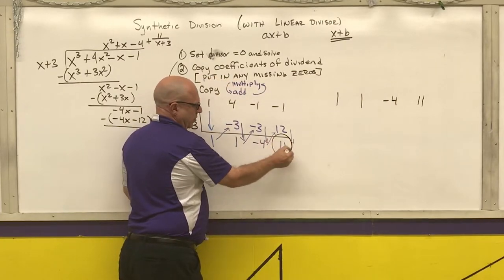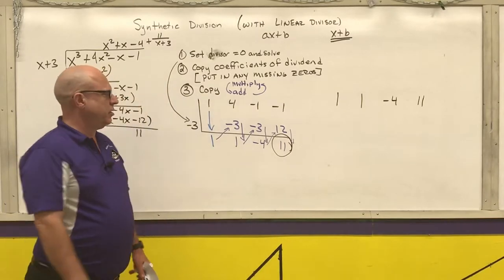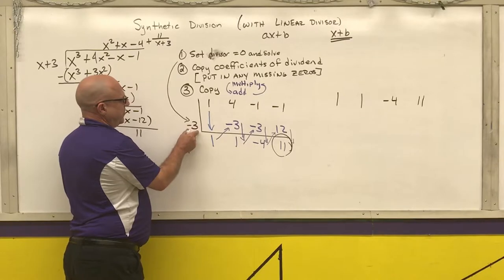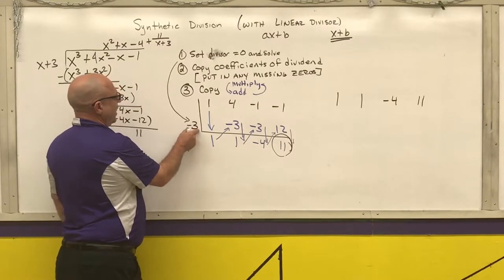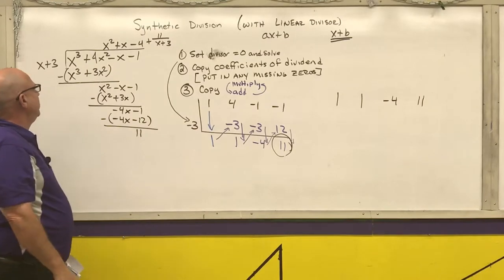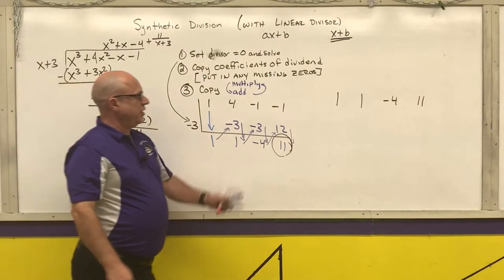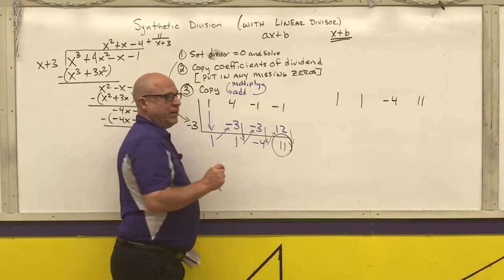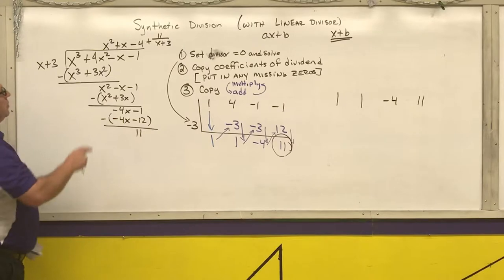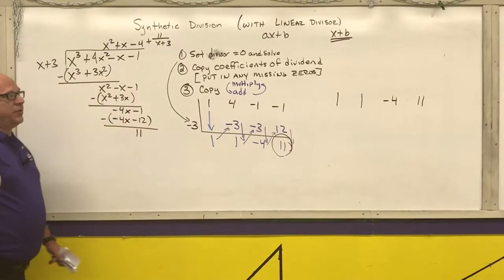This last number is your remainder. At the end of this lecture you're also going to find out that that number is also the value of the function when I stick negative 3 into my original function. So that number gives us two things: one, it gives us the remainder, and two, it gives us the value of the function when I stick that number into the original function.